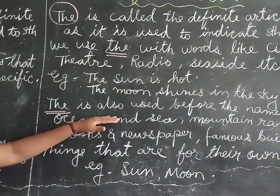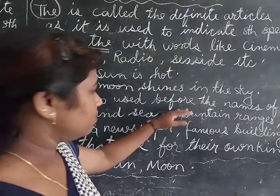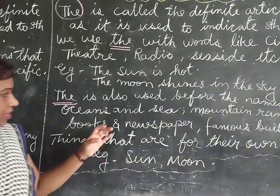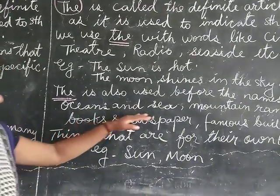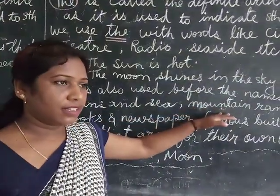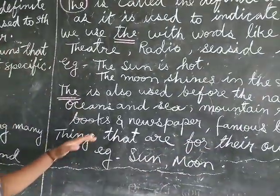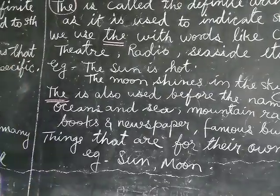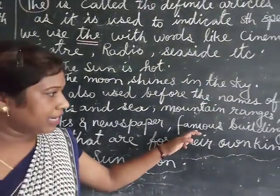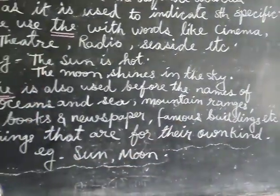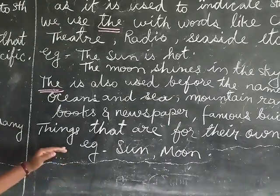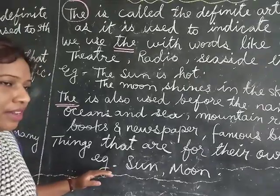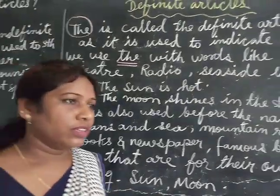'The' is also used before the names of oceans and seas — for example, the Pacific Ocean, the Indian Sea. Mountain ranges — the Himalayas. Books and newspapers — the Gita, the Times of India. Famous buildings like the Taj Mahal, the Red Fort. Things that are unique of their own kind — for example, the sun, the moon.